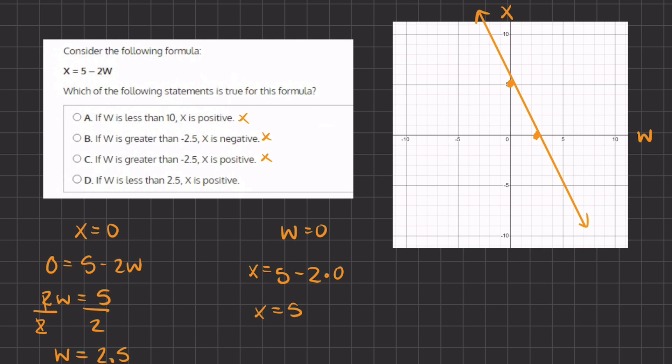And now let's read what answer D states. If w is less than 2.5, so less than 2.5, x is positive. Well, we see that all the values of the x values are positive once it crosses the 2.5 onto the left-hand side. And therefore, D is correct because all the values that are less than 2.5 gives us positive x values. So D is going to be our final answer. Thank you.